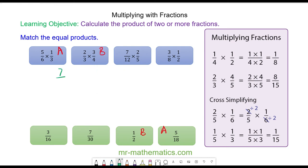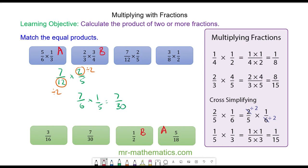Moving on, we have seven over twelve multiplied by two over five. We can cross-simplify here and divide both by two. So we have seven over six multiplied by one over five, which is seven over thirty. So these two also match.